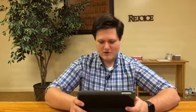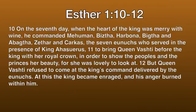Verse 10: "On the seventh day, when the heart of the king was merry with wine, he commanded the seven eunuchs who served in the presence of King Ahasuerus to bring Queen Vashti before the king with her royal crown, in order to show the peoples and the princes her beauty, for she was lovely to look at. But Queen Vashti refused to come at the king's command delivered by the eunuchs. And the king became enraged and his anger burned within him."